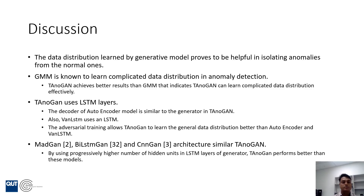Our experiment shows that data distribution learned by a generative model can isolate anomalies from normal data. Gaussian Mixture Model is well known for learning complicated data distributions, yet our proposed TANUGAN gives better results, meaning TANUGAN can also learn complicated data distributions. TANUGAN uses LSTM layers, as does the decoder part of autoencoder and Vanilla LSTM. Our TANUGAN gives better results than Vanilla LSTM and autoencoder because TANUGAN is trained in an adversarial setting.